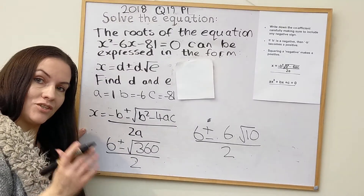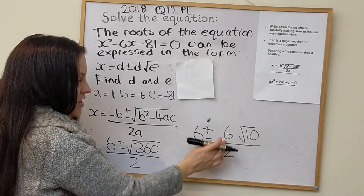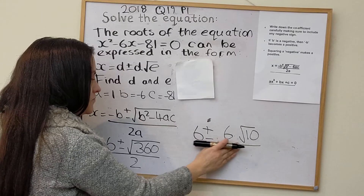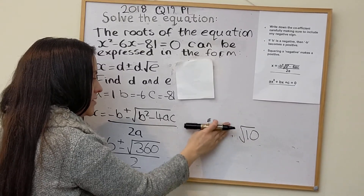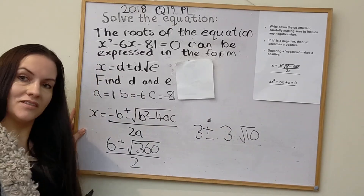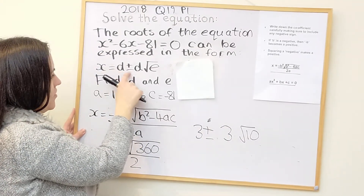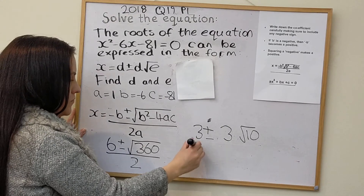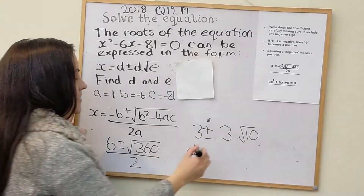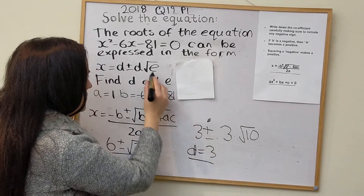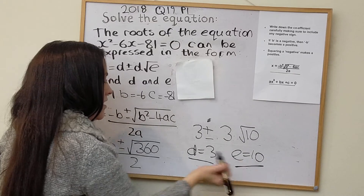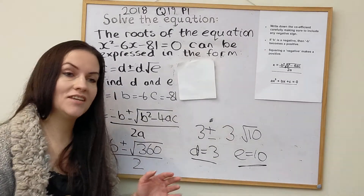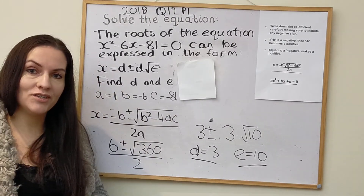So we have 6 plus or minus 6 root 10 all over 2. Dividing through by 2, that becomes 3 plus or minus 3 root 10. Comparing with the required form d plus or minus d root e, the d value is 3 and the e value is 10. I hope that's been helpful — please like, please subscribe, and feel free to suggest any other maths videos you'd like to see.